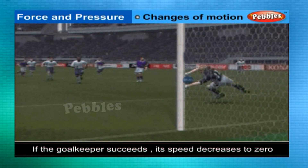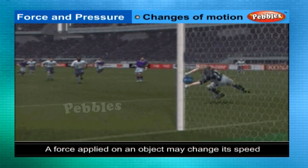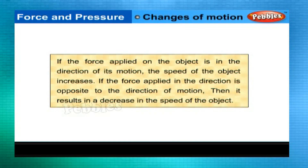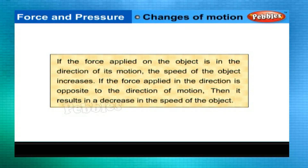If the goalkeeper succeeds in stopping the ball, its speed decreases to zero. These observations suggest that a force applied on an object may change its speed. If the force applied on the object is in the direction of its motion, the speed of the object increases. If the force is applied opposite to the direction of motion, it results in a decrease in the speed of the object.